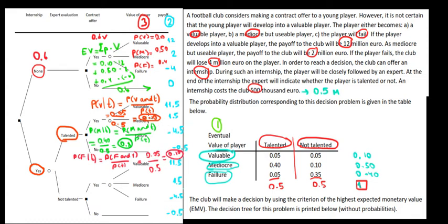So we have our three conditional probabilities: 0.10, 0.8, and 0.10 again. Now, what's the expected value of having a talented player? Once we invest in the internship, the expected value is going to be the sum of the probabilities and their corresponding values.